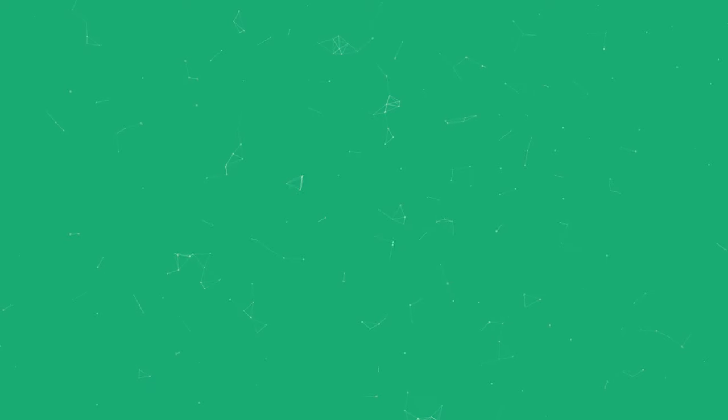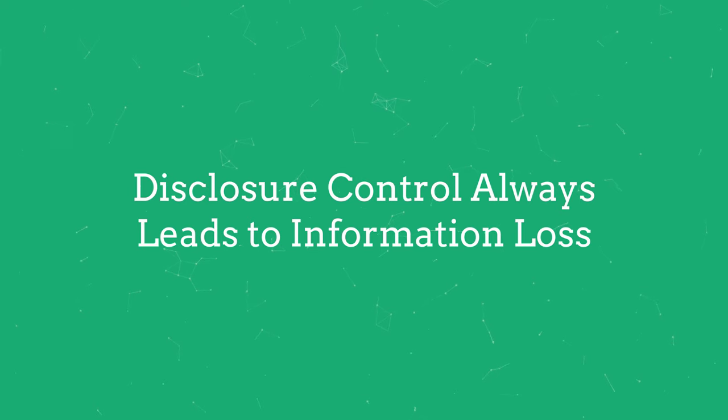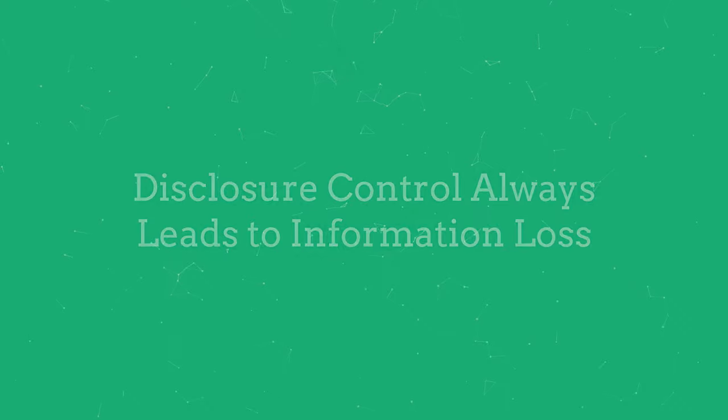The final step in the SDC process is to assess the utility of the data after disclosure control methods have been applied. SDC is always a trade-off between risk of disclosure and loss of data utility — we're trying to maximize data utility while reducing the risk of disclosure to an acceptable level. Data utility is essentially the usefulness and validity of the anonymized data for statistical analyses. Applying disclosure control will always lead to some information loss, and in some cases that loss would be so high that the data loses its utility. This is why information loss must be evaluated with respect to the intended uses of the data.